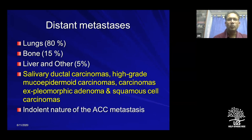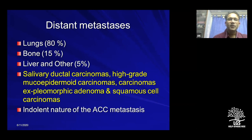Most salivary gland tumors are locoregional. About 15–20% are local-regional, and very rarely they present with distant metastasis — lungs being the most common site. Higher-grade tumors such as high-grade mucoepidermoid carcinomas, carcinomas ex pleomorphic adenoma, and squamous cell carcinomas have higher rates of distant metastasis. Importantly, pulmonary metastasis in adenoid cystic carcinoma behaves very indolently — survivals of 5, 10, 15, or even 20 years have been reported. Management of pulmonary metastasis in adenoid cystic carcinoma is itself a significant topic.